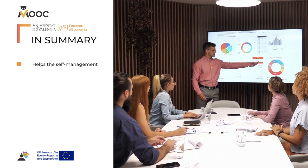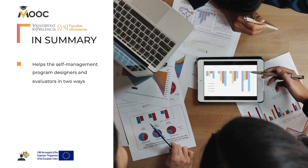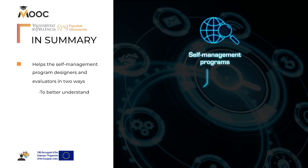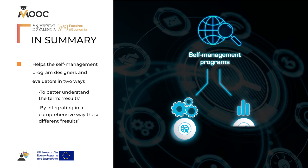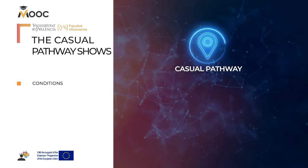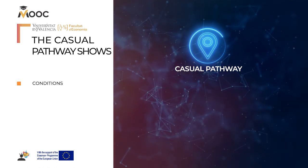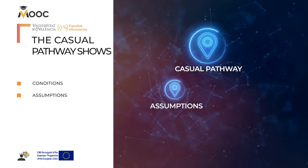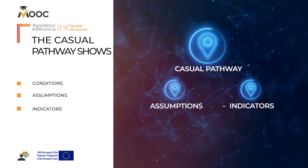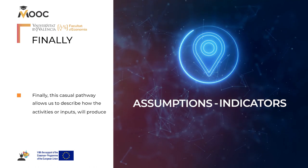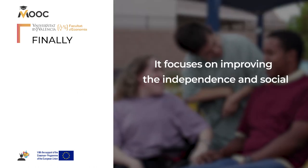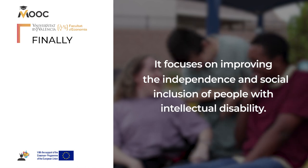In summary, the theory of change helps self-management program designers and evaluators in two ways. Firstly, to better understand assessment terms — results composed by outputs, outcomes, and impacts. Secondly, by integrating in a comprehensive way these different results components within a logic framework, or causal pathway. The causal pathway shows the conditions that have to occur for our self-management program to work as expected, with assumptions on the right side, and also the indicators to assess the progress on the left side. Finally, this causal pathway allows us to describe how the activities or inputs will produce a change, focusing on improving the independence and social inclusion of people with intellectual disability.